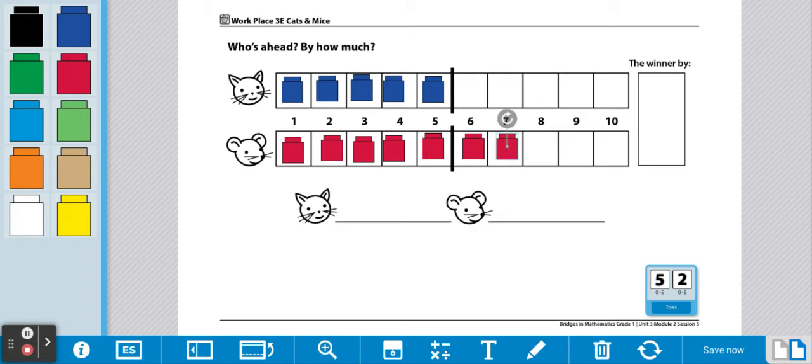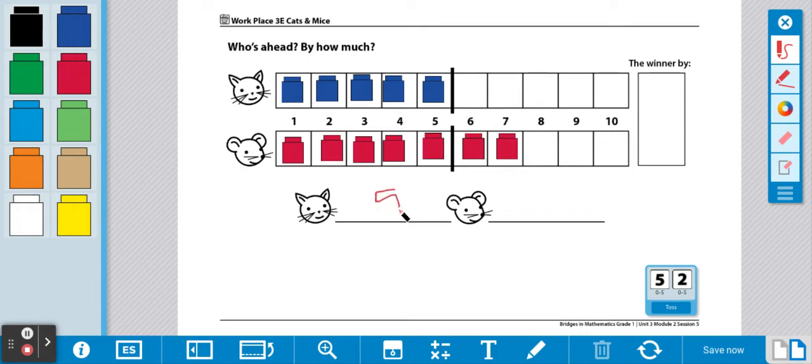Now you're going to write your number at the bottom down here. The cat had 5 and the mouse had 7. Over here you're going to determine how many more they won by. So the mouse won, it had more, and it had 2 more. So we're going to write the number 2 over here. It won by 2.